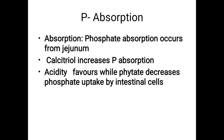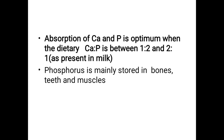Phosphate absorption occurs in the jejunum. Calcitriol (vitamin D) increases phosphorus absorption, and acidity favors absorption, while phytates — present in green leafy vegetables — decrease phosphate intake by intestinal cells. Absorption of calcium and phosphorus is optimum when the dietary calcium-to-phosphorus ratio is between 1:2 and 2:1, as present in milk — that is the reason milk is a good source of calcium. Phosphorus is mainly stored in bone, teeth, and muscle.